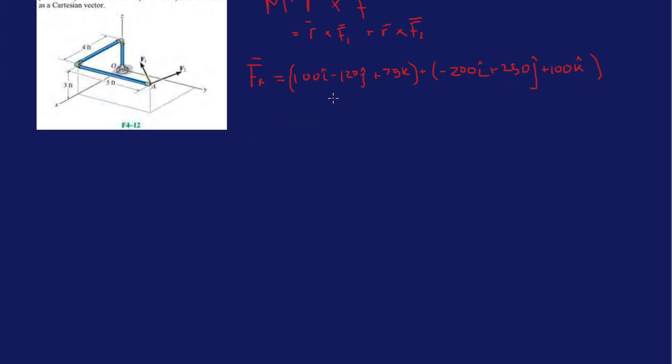So in order to add the two vectors, we need to add components - the I's with the I's, J's with J's, K's with K's. So this will give us FR: 100 minus 200 is minus 100I, minus 120 plus 250 is 130J, and then 75 plus 100 is 175K.